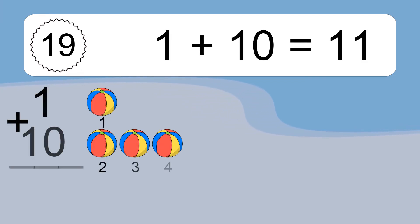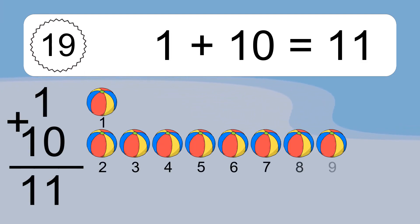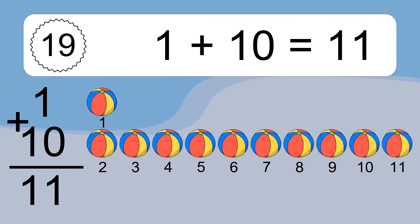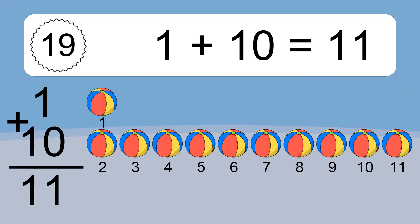1, 2, 3, 4, 5, 6, 7, 8, 9, 10, 11. 1 plus 10 equals 11. Let's count it. 1, 2, 3, 4, 5, 6, 7, 8, 9, 10, 11.